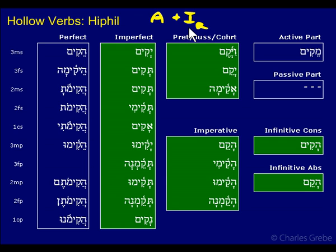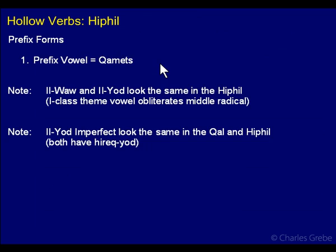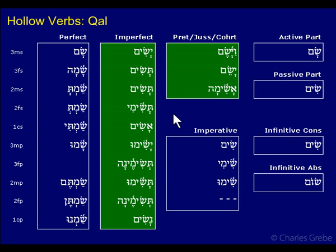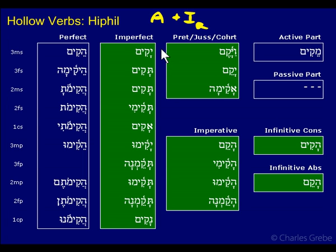Also, you cannot distinguish between the Qal yud-middle and the Hiphil in the imperfect. The Qal yud-middle looks just like this — you have the prefix vowel qamets, you have yud because it's a yud-middle. So it looks just like the Hiphil. You have yassim. Here's the slide from the Qal module — yassim, with qamets and yud. For the Hiphil: yakim — the same vowels. So you cannot distinguish those two.